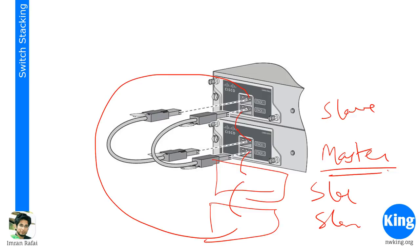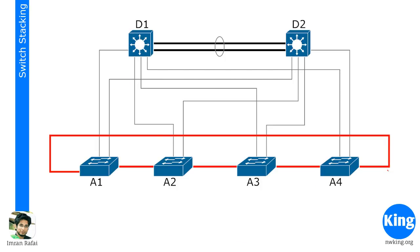For all practical purposes, switches A1, A2, A3, and A4 will start acting like one switch. If there is traffic coming on A2 that needs to go through a physical link on A3, the master controls all devices. If the master is down, the entire logical switch is down. But if one switch, say A3, physically goes down, A1, A2, and A4 will still work as a logical switch.